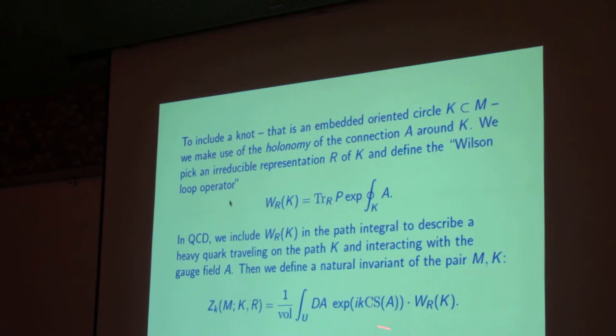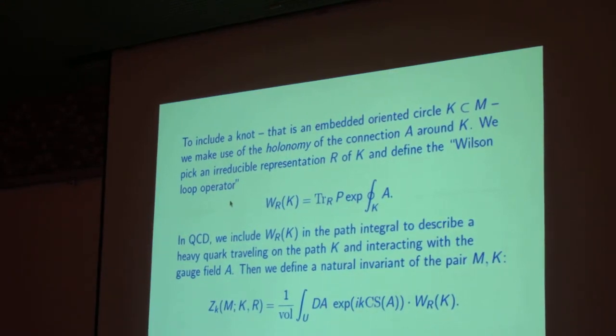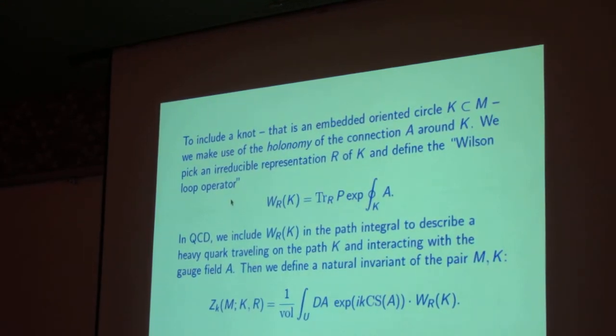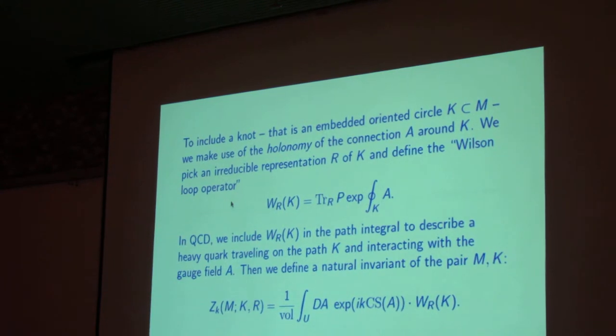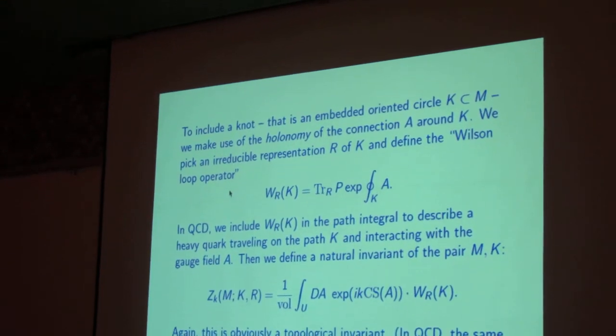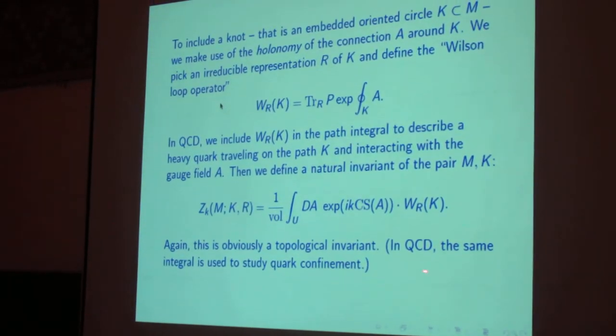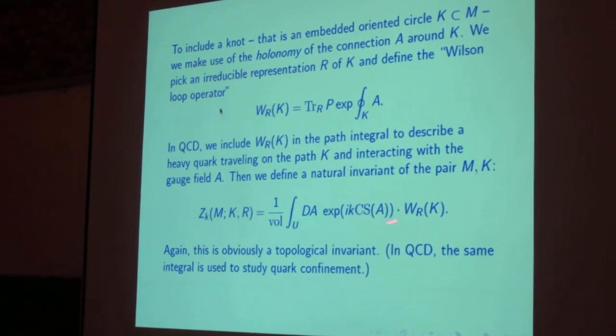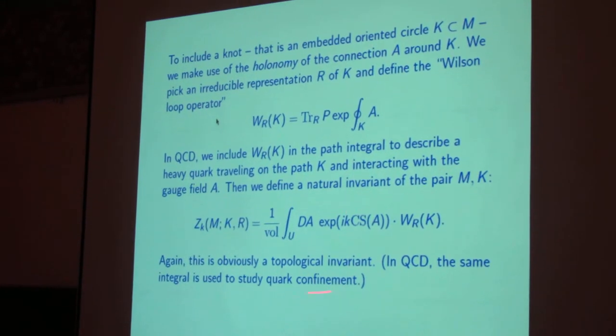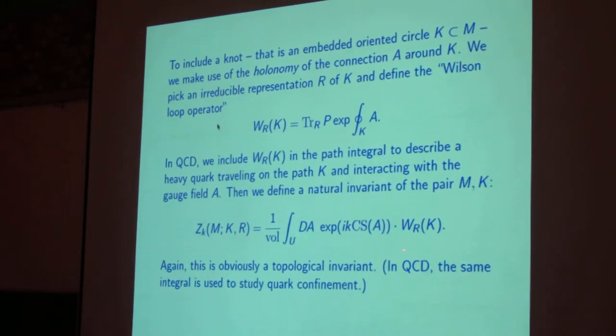So then we define a path integral in the presence of the particle. So we integrate over all gauge fields the same as before, but now we include a factor of the Wilson loop operator. So again, this is obviously a topological invariant. And in QCD, the same formula, except that this would have to be the Yang-Mills rather than the Chern-Simons action, is used to study quark confinement.